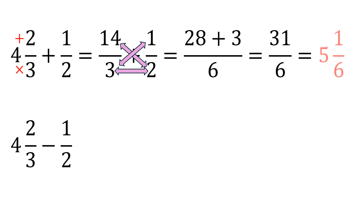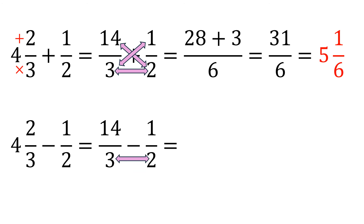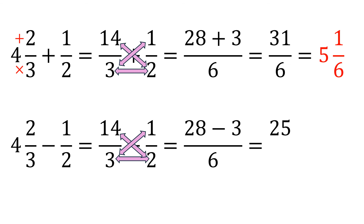Whenever the answer is an improper fraction, change it to a mixed number. For subtraction with a mixed number and a fraction, do the same procedure — change the mixed number into improper form by multiplying and adding to get the numerator fourteen. Copy the second term minus one-half, then cross-multiply: three times two is six, fourteen times two is twenty-eight, copy the minus, three times one is three. Subtract the top: twenty-eight minus three is twenty-five, copy the denominator six. It's an improper fraction, so change it to mixed form: twenty-five over six is four and one-sixth.